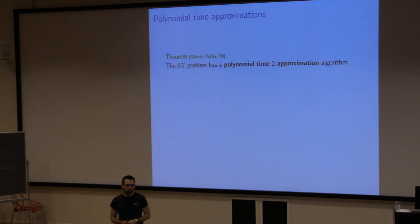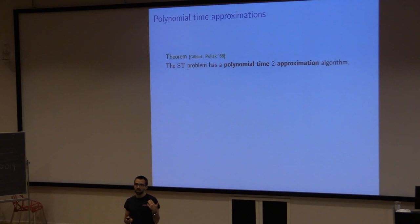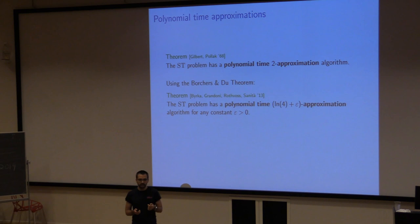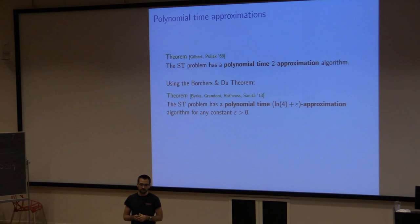It's not hard to get a 2-approximation for this problem: take the metric closure on the terminals, compute a minimum spanning tree, and it's an easy exercise to show this is a 2-approximation. For quite some time this was the best known factor, until the mid-90s when a new tool led to the best known approximation factor of ln 4 plus epsilon.